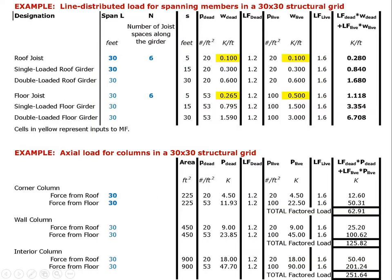Looking at the interior column in the table, it supports 900 square feet of area. Multiplying the roof dead load of 20 pounds per square foot times 900 square feet gives 18,000 pounds, which we convert to 18 kips. We then perform the same calculation for roof live load, floor dead load, and floor live load, apply the load factors, and arrive at a total factored axial load of 252 kips that the interior column must support.